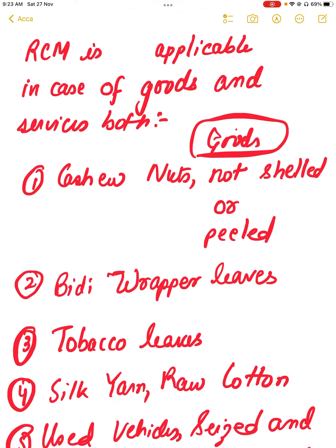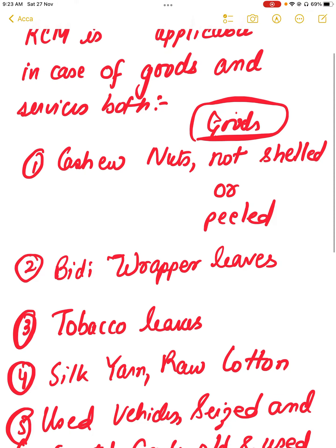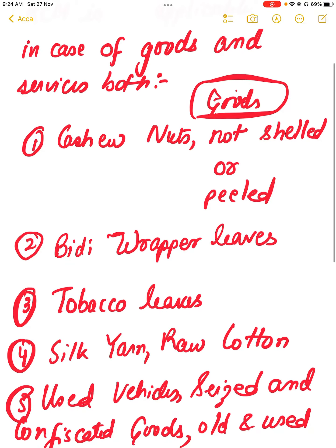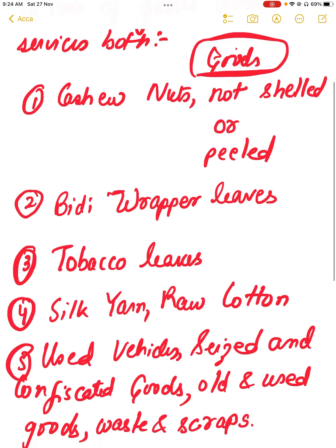Hi guys, welcome to 'As Simple As Possible.' In this video we are going to discuss that RCM is applicable in GST in case of goods and services both. In the earlier act it was applicable only in case of services, but in GST it is applicable for goods as well as services. It is important to remember the names of the goods for which RCM is applicable.